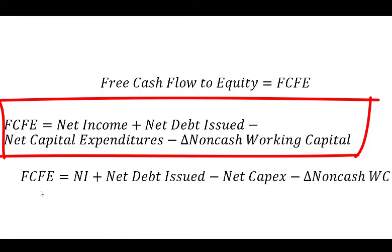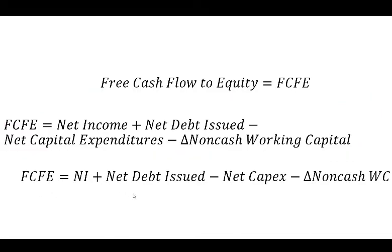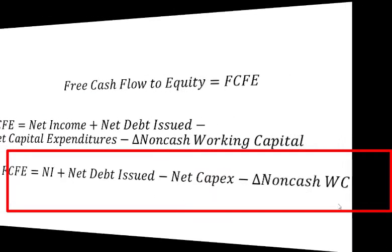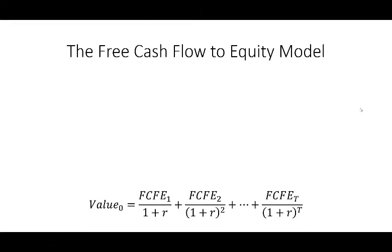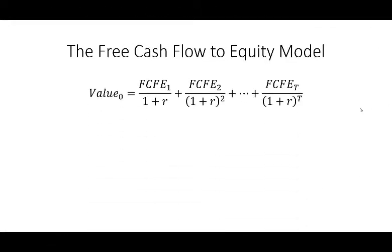A more shorthand way to write free cash flow to equity is given in the formula shown here. The value of a company is the sum of all the free cash flows to equity we're going to receive divided by one plus R. This little R is a discount rate — it reflects inflation, meaning money received in later years is worth less. So the free cash flow next year, you discount that back divided by one plus R.